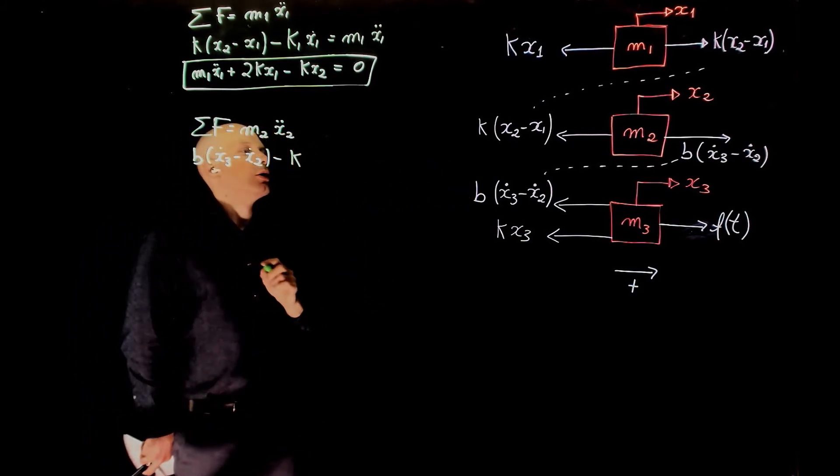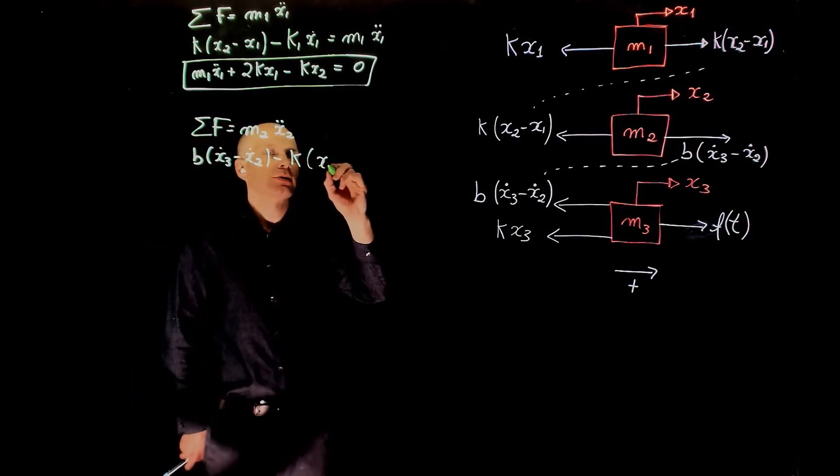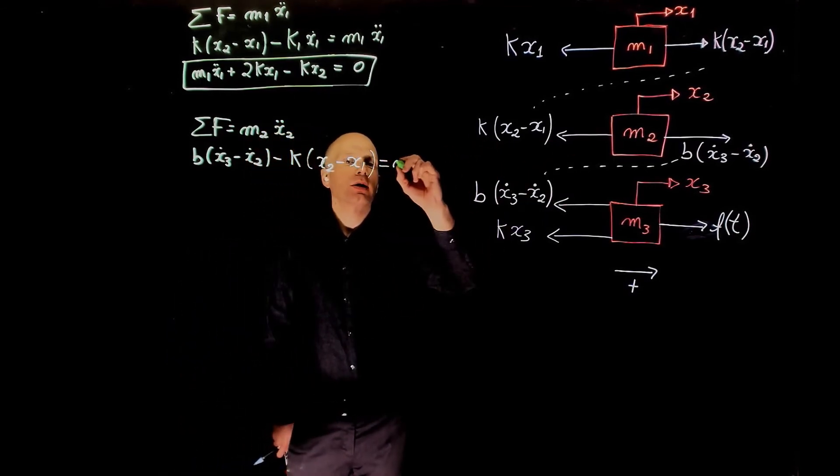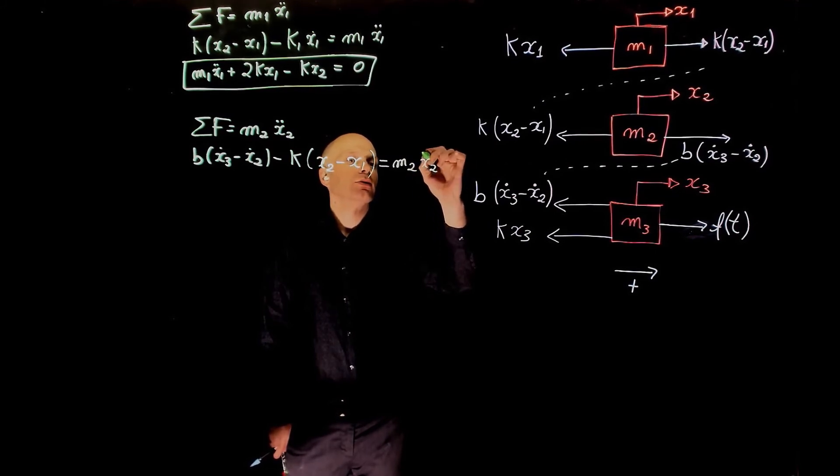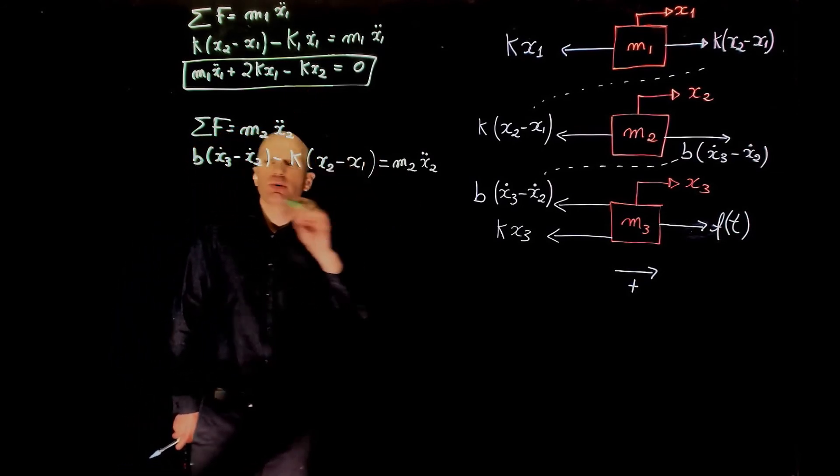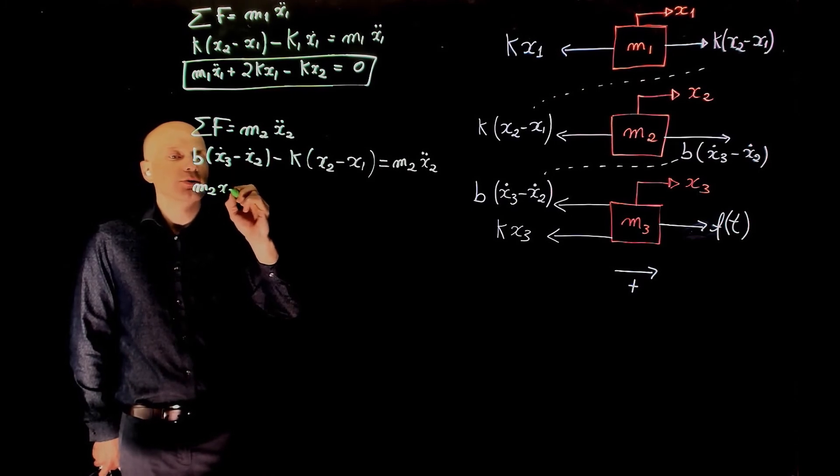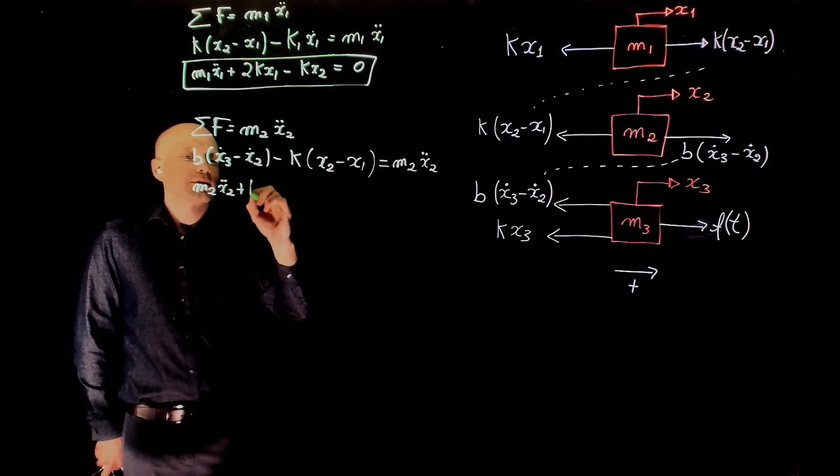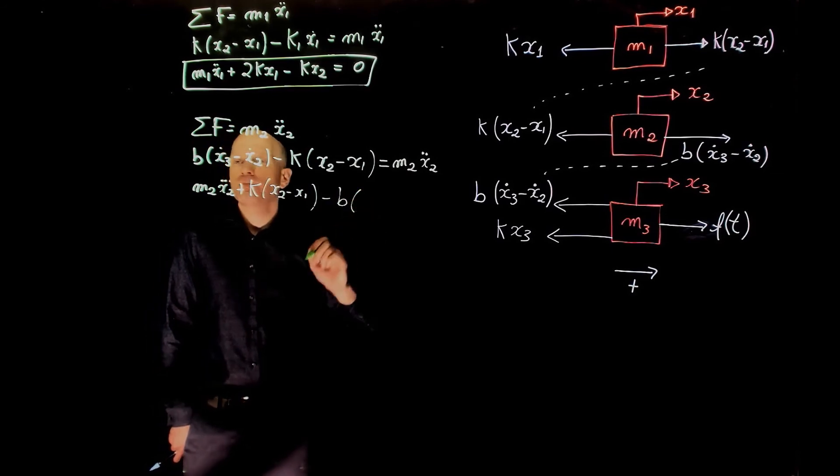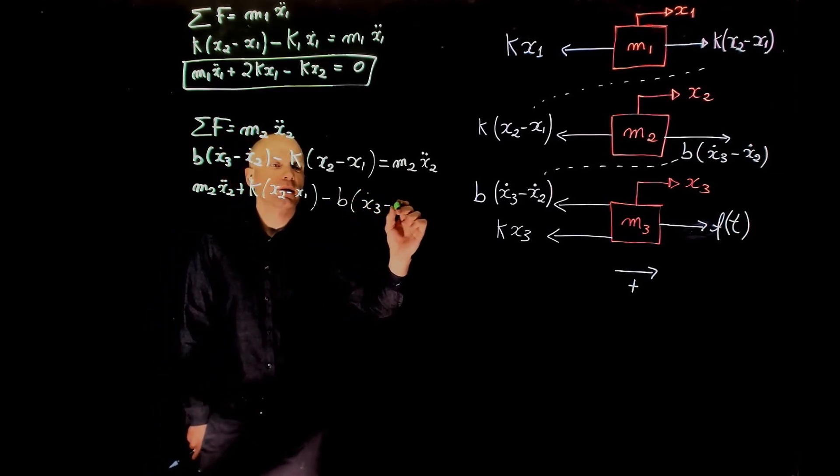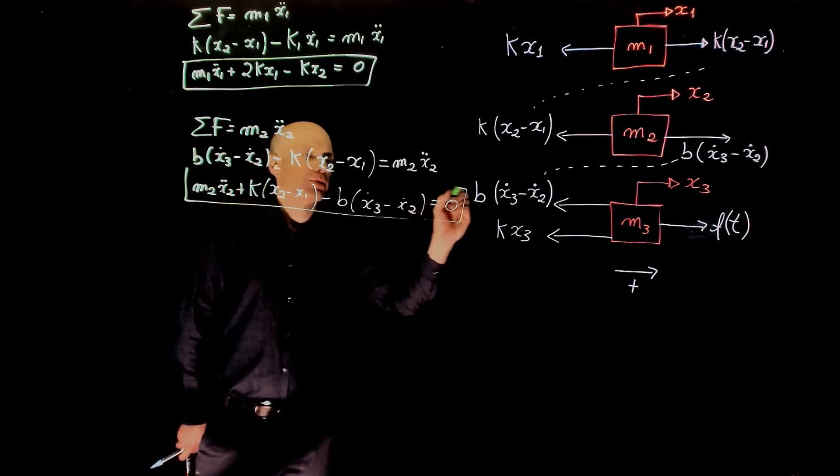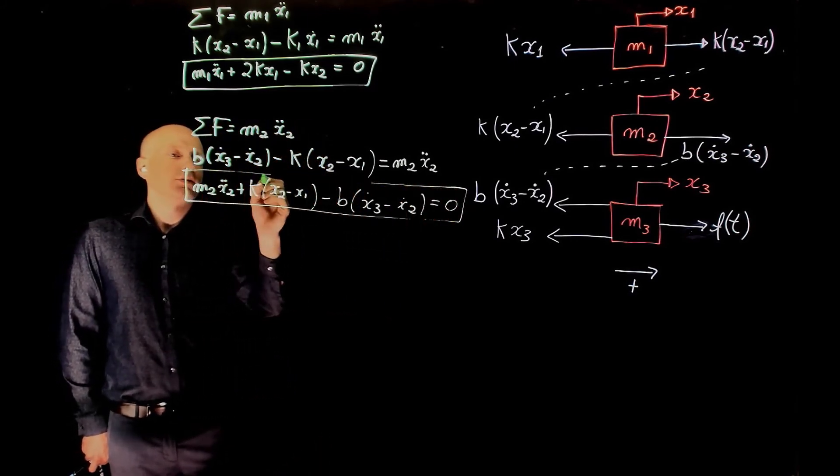Minus k(x2 minus x1) equals to acceleration of mass 2 times its mass. And again, following the same convention, we can rearrange this: m2 x2 double dot plus k(x2 minus x1) minus b(x3 dot minus x2 dot) equals to zero. So here is the equation for the second mass.